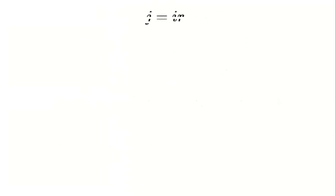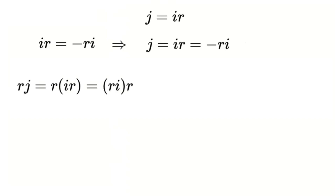Let's take a step back. Remember we defined j as i times r, but we never defined what r times i is. To move forward, let's assume that i and r are anticommutative — that means i times r equals negative r times i. That gives us j equals i times r, which is the same as negative r times i. Now let's calculate r times j. That's r times i times r. Since i and r anticommute, r times i is negative i times r, or negative j. So now we have negative j times r.